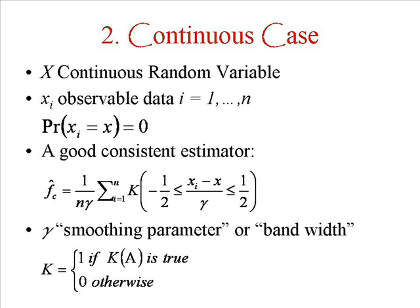You can understand that, with respect to the previous case, to the discrete case, we have two differences. The first one is the existence of a parameter, gamma, which is a sort of smoothing parameter or bandwidth, which is something which truly depends on the precision that you want to get in the estimate.